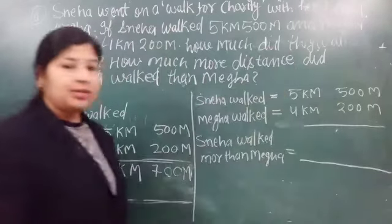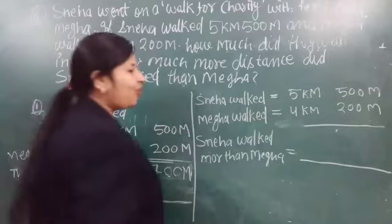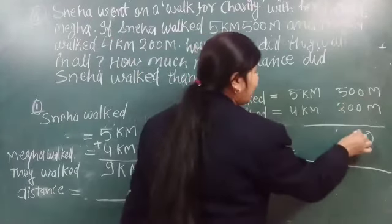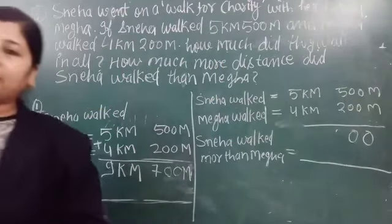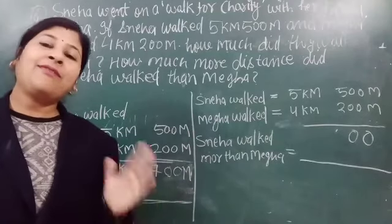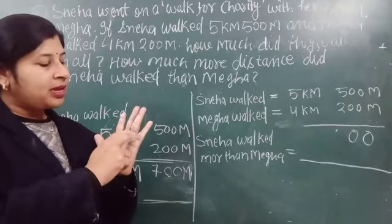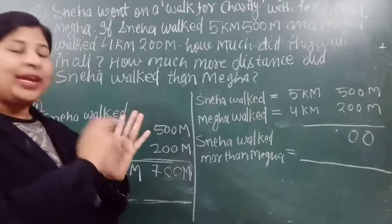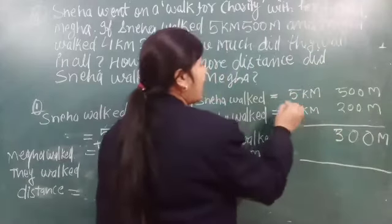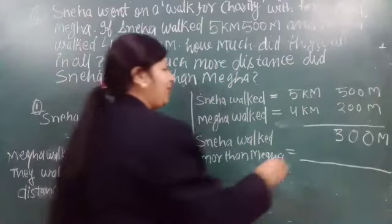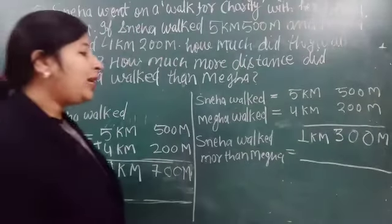Zero minus zero is zero. Zero minus zero again is zero. Five minus two: we count on fingers — one, two, three, four, five — minus two gives three. And five minus four is one. So one kilometer, three hundred meter।